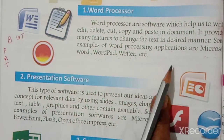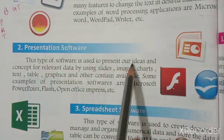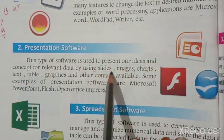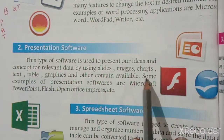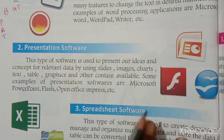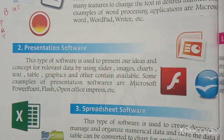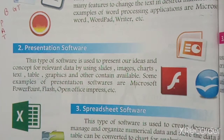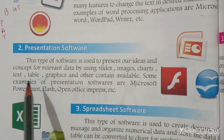The second type is presentation software. This type of software is used to present ideas and concepts with relevant data by using slides, images, charts, text, tables, graphics, and other content. Some examples of presentation software are Microsoft PowerPoint, Flash, OpenOffice, and Impress. Using these tools you can make a presentation in different forms using slides, images, charts, text, tables, and graphics.